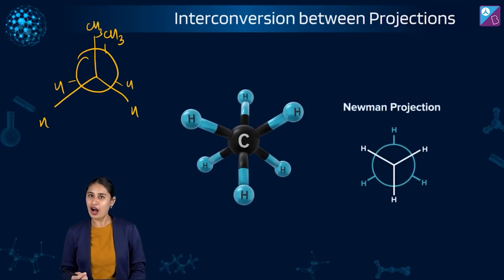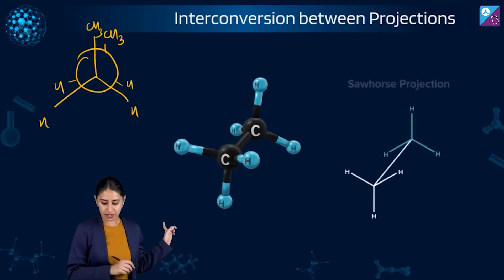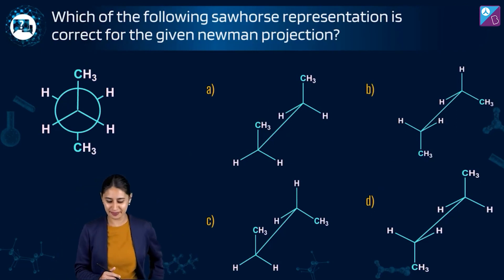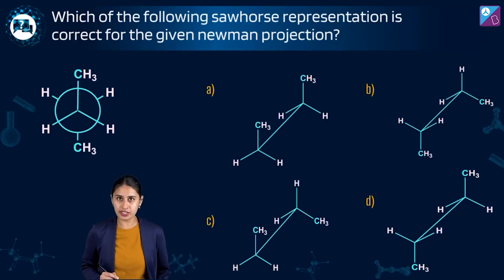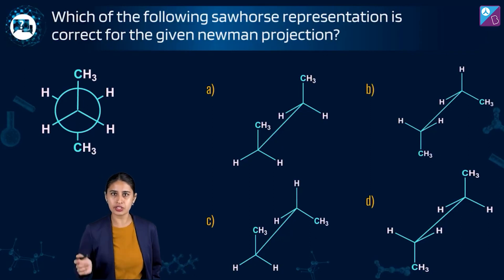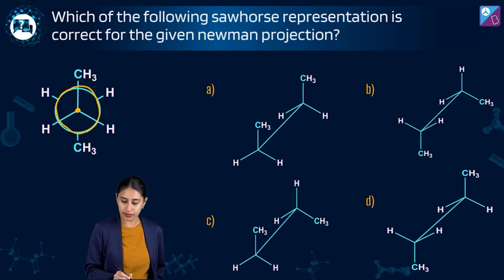Keeping those points in mind, here is a question: which of the following sawhorse representations is correct for the given Newman projection? Apply your brain and your visual understanding. You have just seen sawhorse and Newman projection and their interconversion. You know that this point and the big circle represent the two carbons.